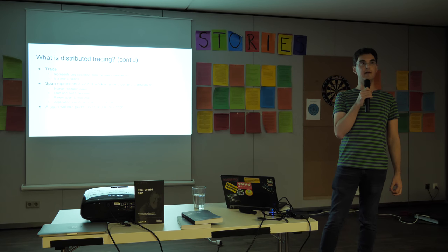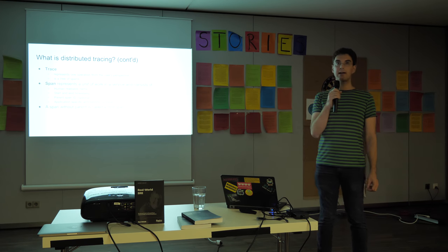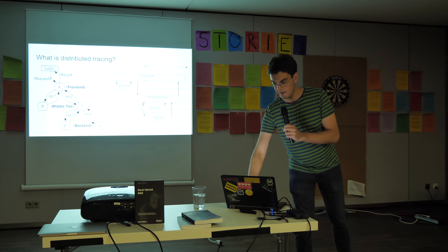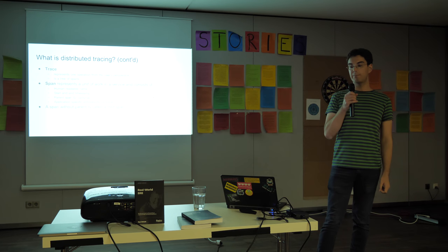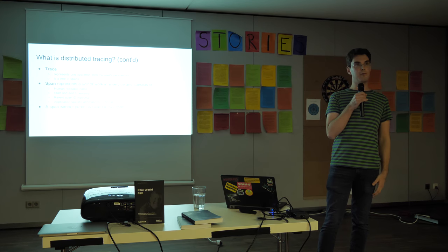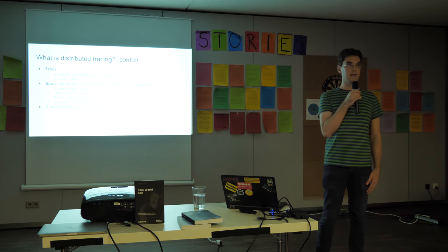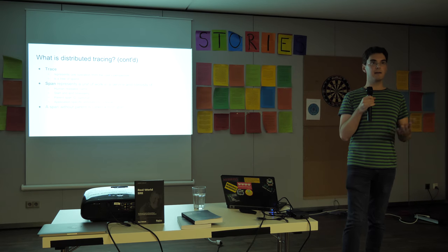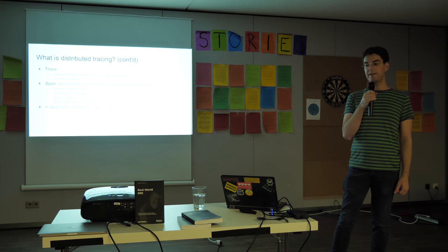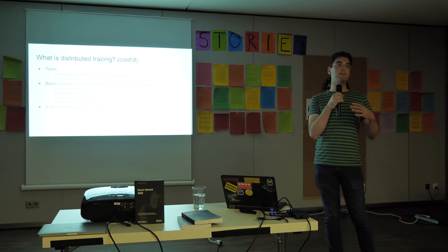A span consists of a human readable name so that we can understand what it actually is. It has a start and an end time so that we know where it fits in this chart and how long the unit of work took. It has a parent span ID so that we can form this tree structure, which is optional because the root span does not have a parent. And typically you also have application-specific annotations. One annotation you might want to add to your span is the revision of the service where it came from.